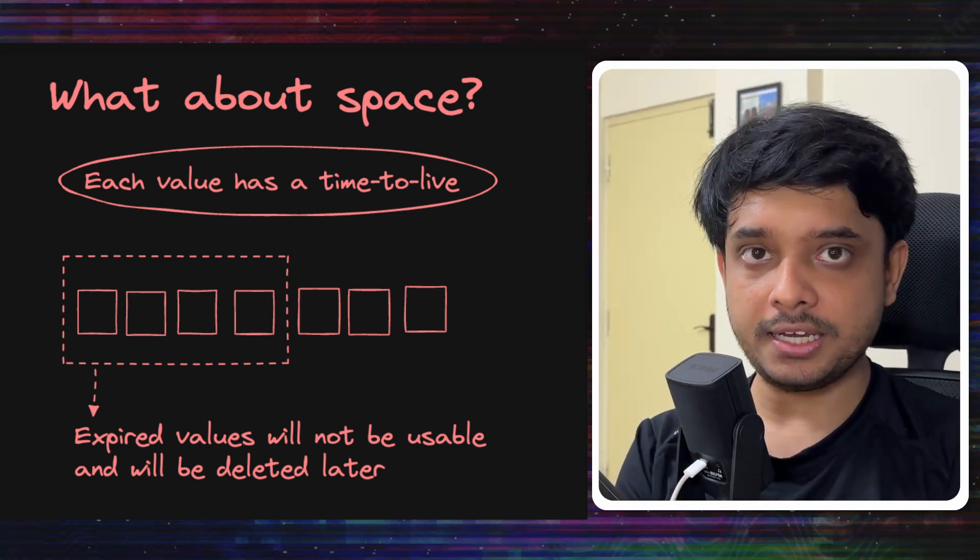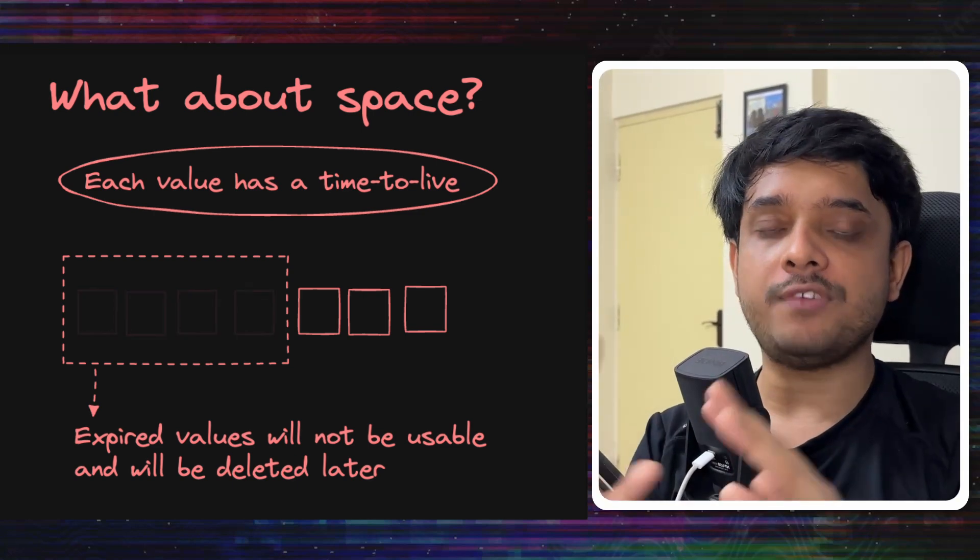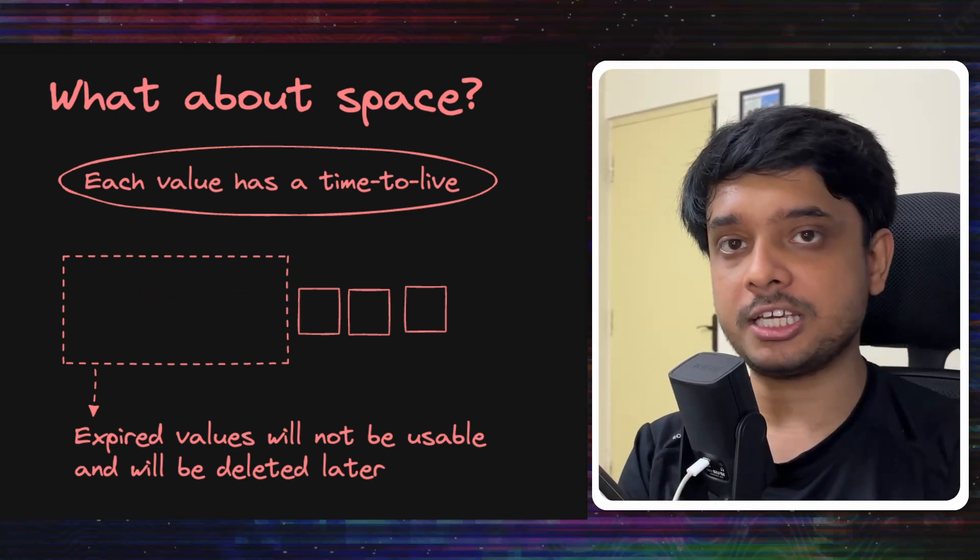They have a process called daily compaction which runs daily and it removes, it deletes all the expired values they have. It deletes all the expired cells that they have.